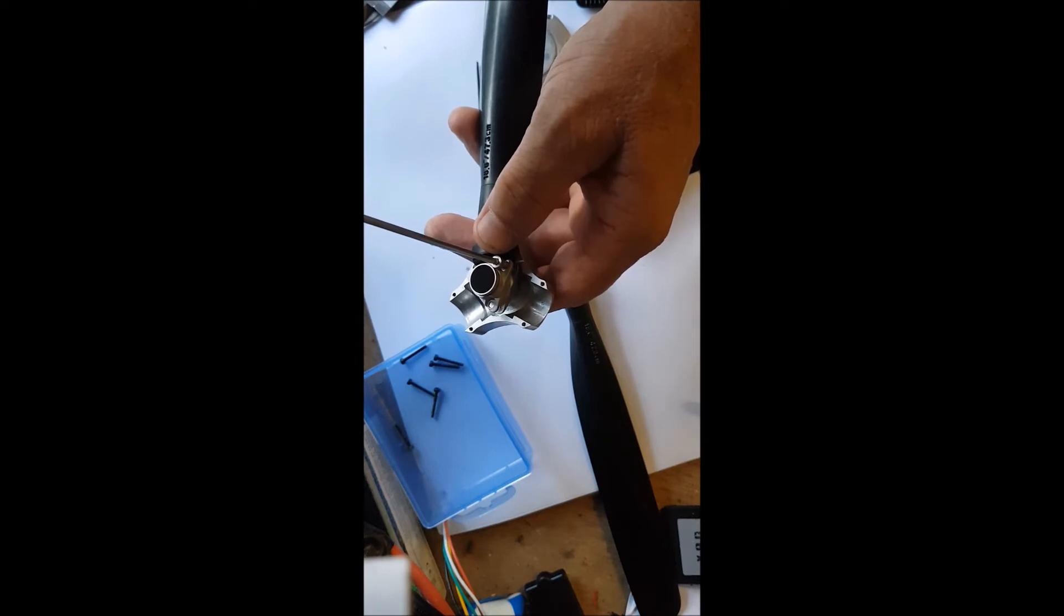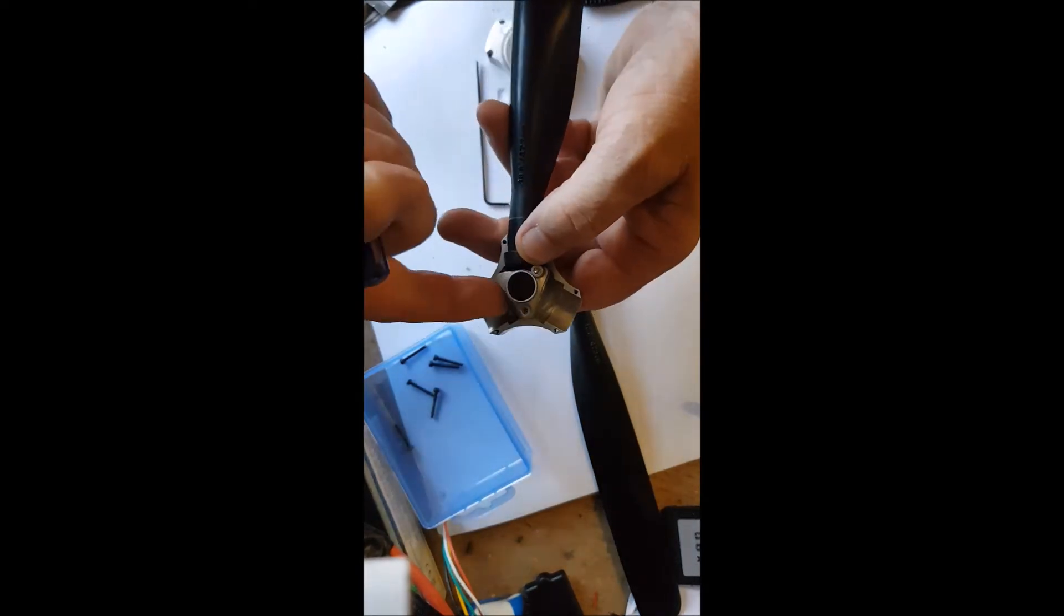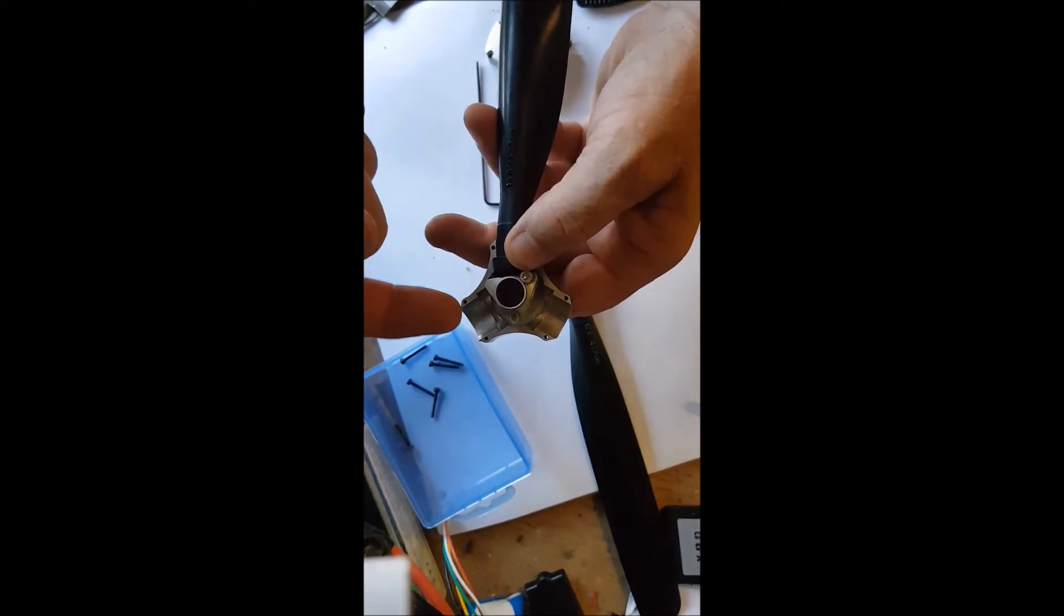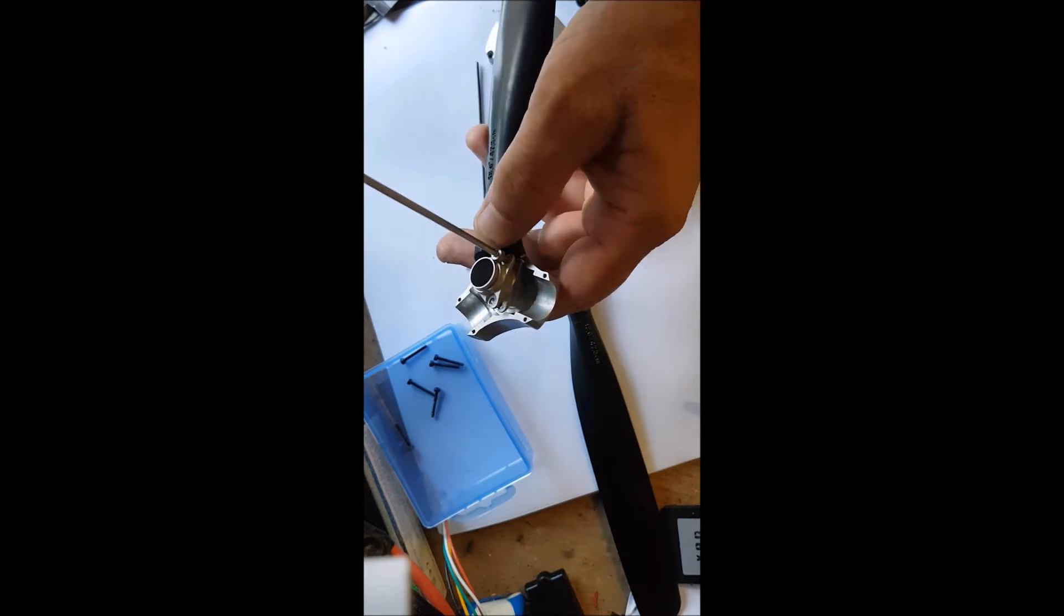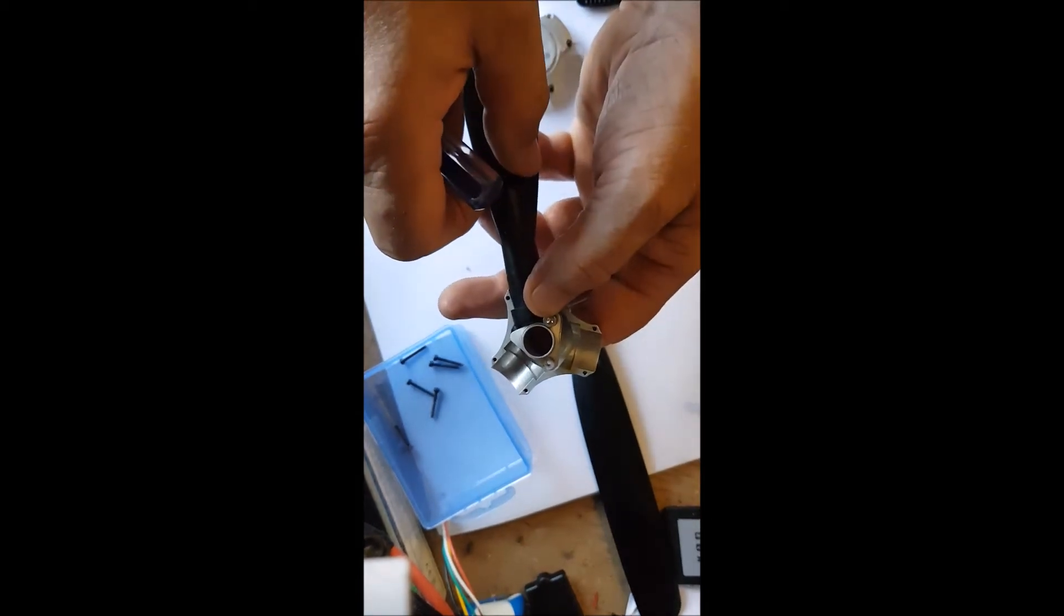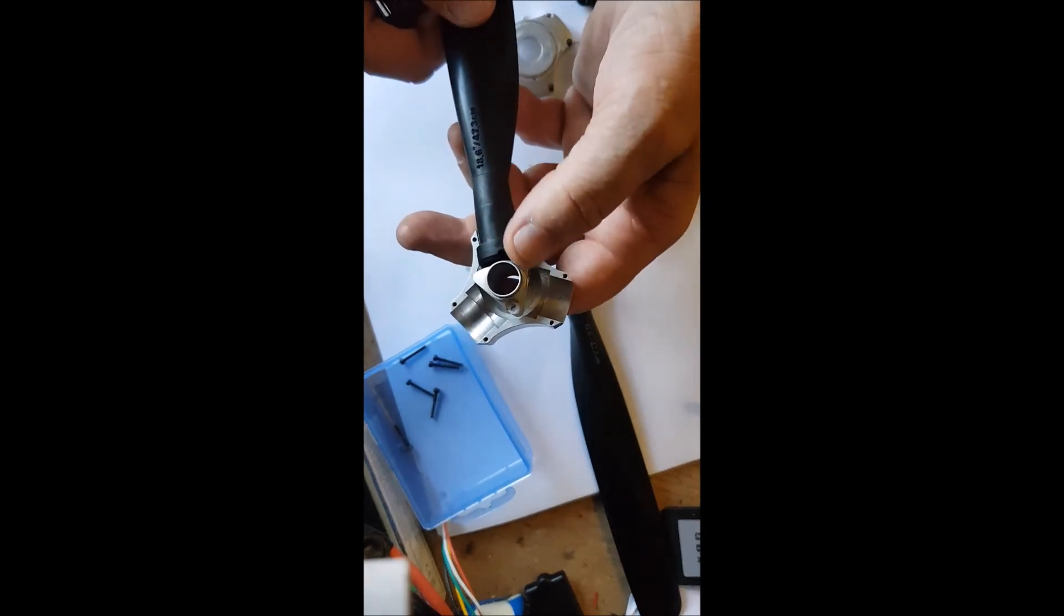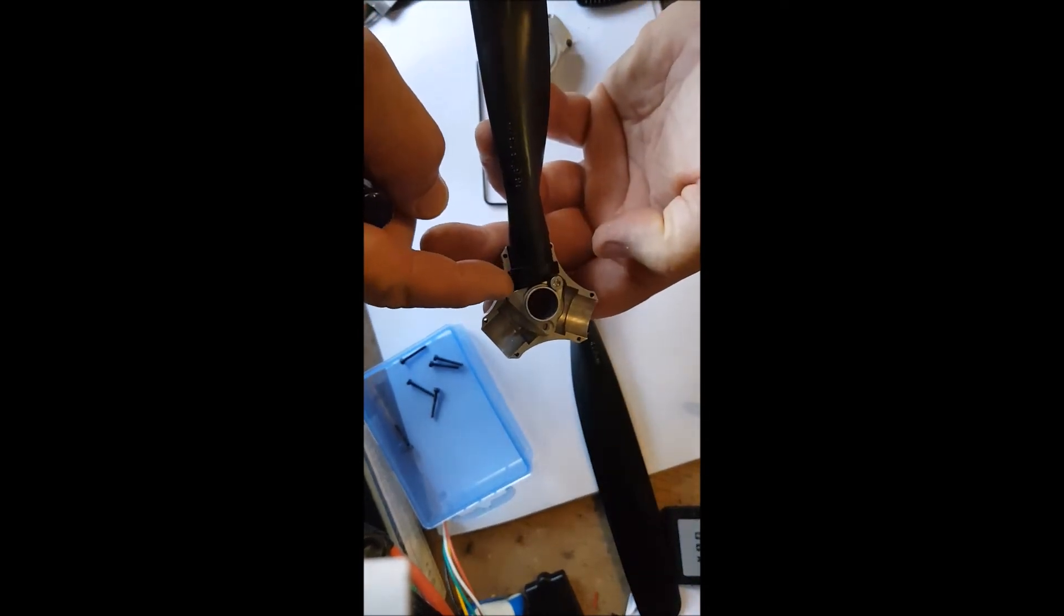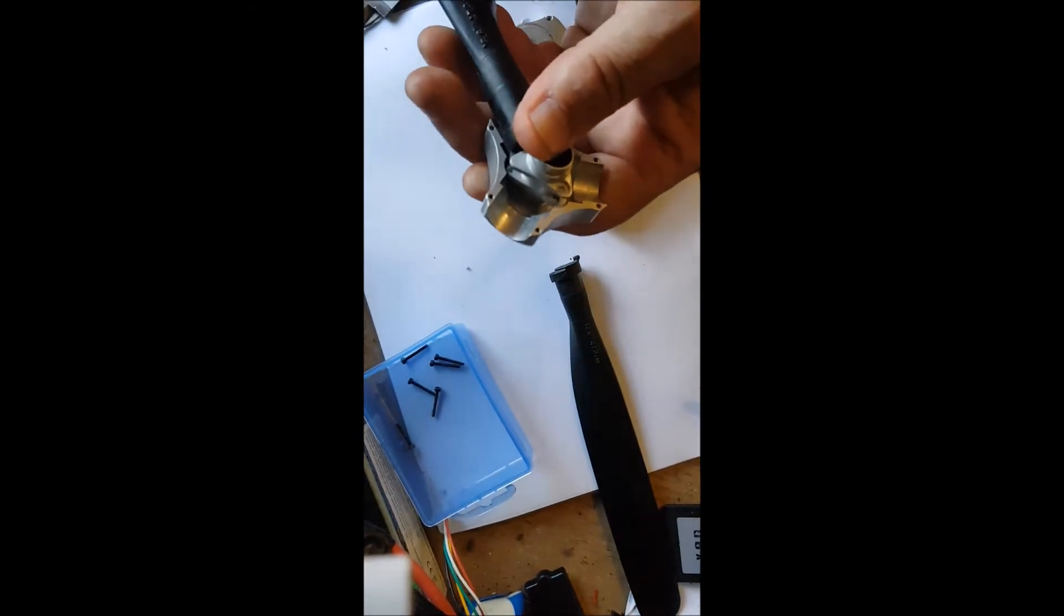Which means you're increasing the pitch. Clockwise is increasing the pitch. Anti-clockwise is decreasing the pitch because it's pulling this corner of the propeller downwards. Okay, now everything is fairly tight in there.